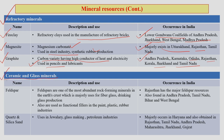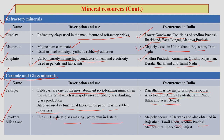Ceramic and glass minerals have very important uses in daily life. Feldspar is one of the most abundant rock-forming minerals, used as functional fillers for paint, plastic, and rubber industries. Rajasthan has the largest feldspar deposit, with smaller amounts in Andhra Pradesh, Tamil Nadu, Bihar, and West Bengal. Quartz and silica sand are used for jewellery, glass making, and the petroleum industry, found in Haryana, Rajasthan, Tamil Nadu, Andhra Pradesh, Maharashtra, Jharkhand, and Gujarat.